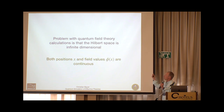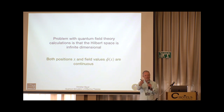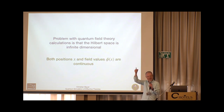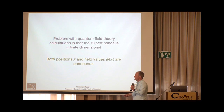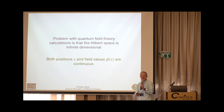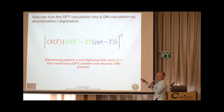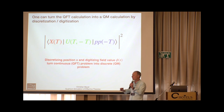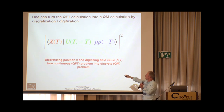A big problem in quantum field theories is that the Hilbert space is actually infinite-dimensional — I have a field at every point in space with infinitely many points, and each field can have a continuous value. Even the most powerful quantum computer won't have an infinite-dimensional Hilbert space. What we do is discretize the position and digitize the field value so that this continuous quantum field theory turns into a finite-dimensional Hilbert space — essentially quantum mechanics.